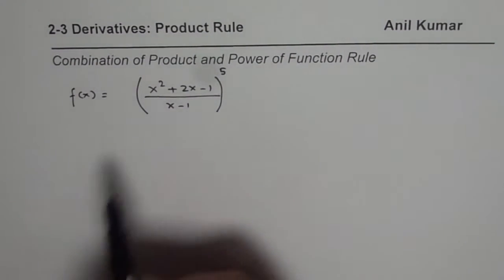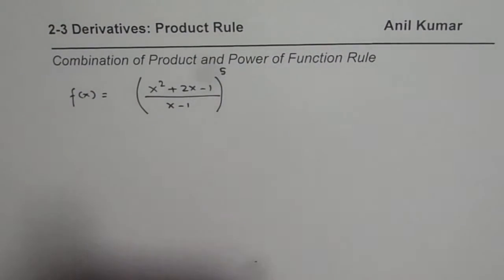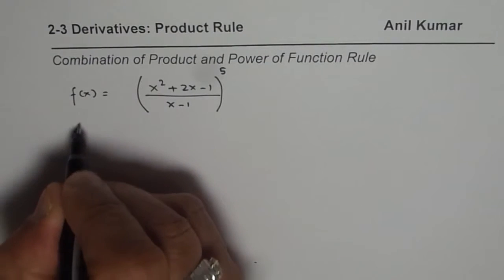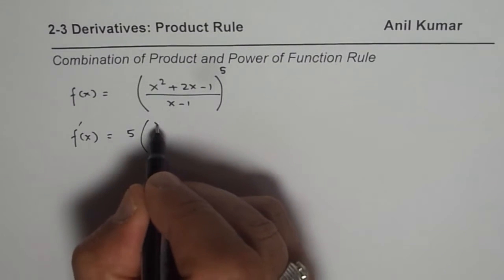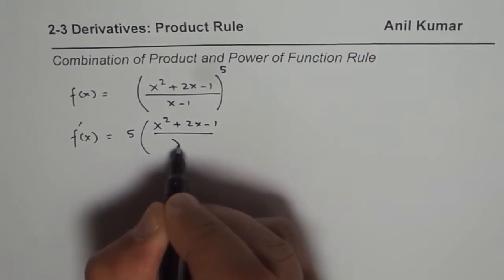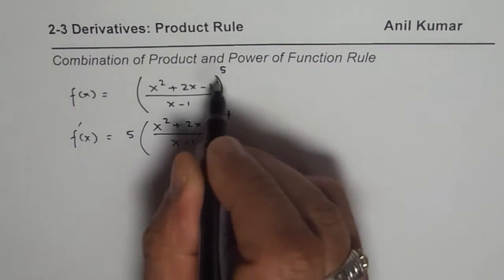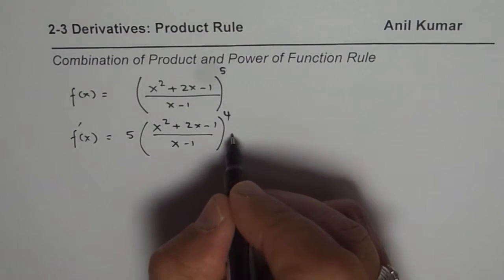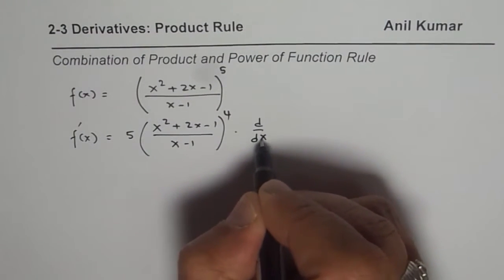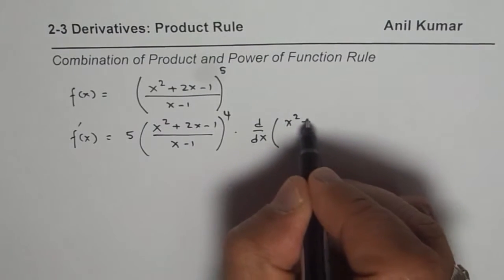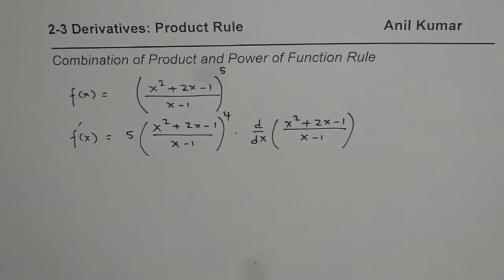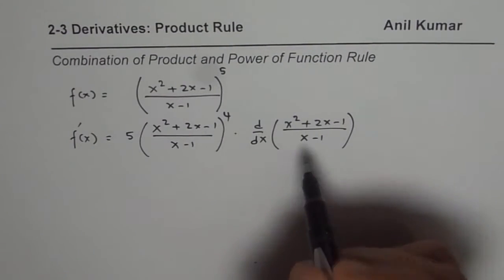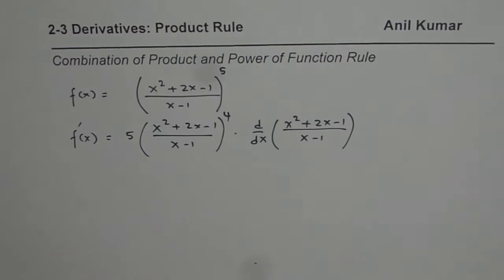Using the product rule — well, these are quotients. So what we can do is find f'(x). Let us apply the power rule first, which gives us 5 times the whole function (x squared plus 2x minus 1 over x minus 1) to the power of 4, times the derivative d/dx of the inside function, which is x squared plus 2x minus 1 divided by x minus 1. Now how do we find the derivative of that inner function? Let us do that part separately and then combine the two.